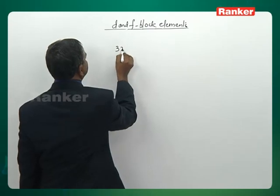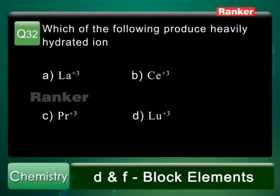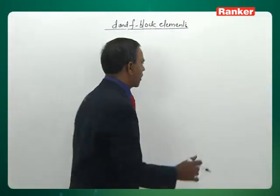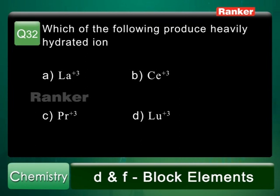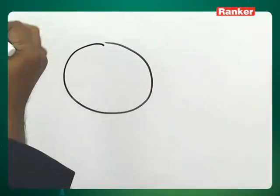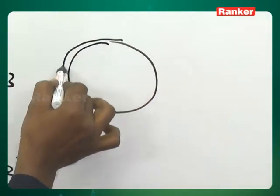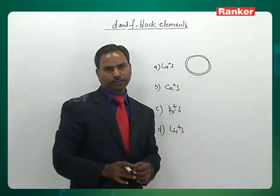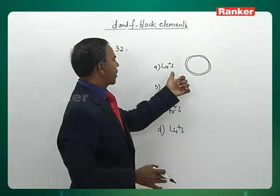Question number 32: which of the following produces the most heavily hydrated ion? According to the lanthanoid contraction effect, from lanthanum to lutetium the ionic size is decreasing. The options are La³⁺, Ce³⁺, Pr³⁺, and Lu³⁺. Lanthanum plus 3 is large in size, so its charge density is very thin, and it can accommodate only about 6 or 8 water molecules.